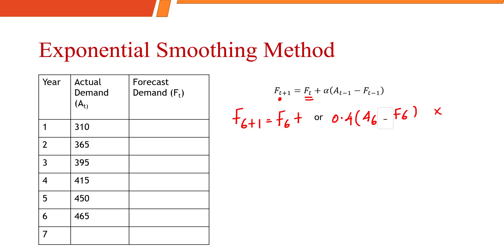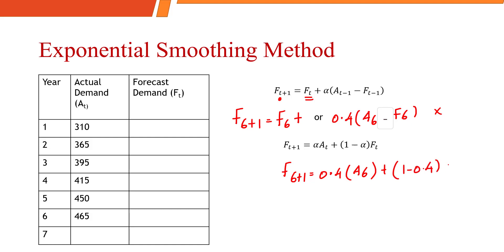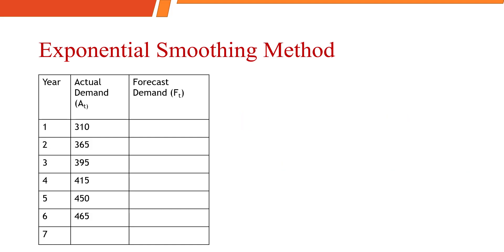I prefer the second method because it is simpler. To calculate the demand for the 7th period, we take alpha (0.4) into the actual demand of the 6th period, plus 1 minus alpha into the forecasted demand of the 6th period. This is more convenient, so I use this particular method. Let's start the calculation using the second formula.